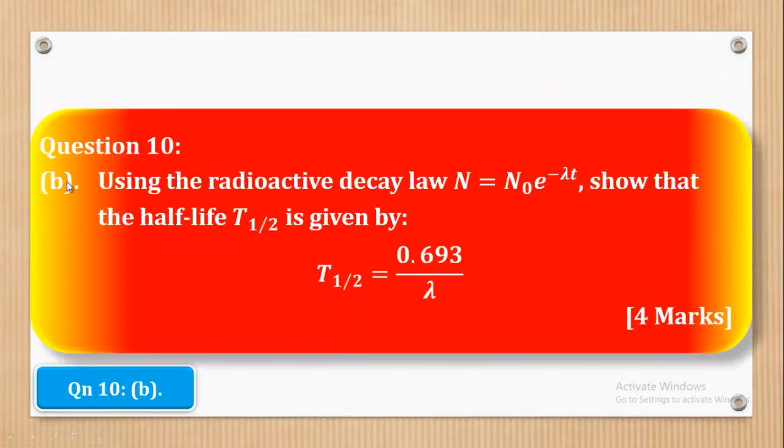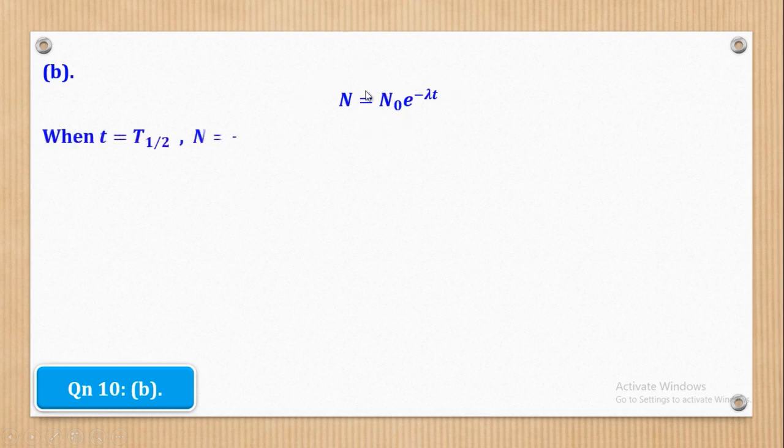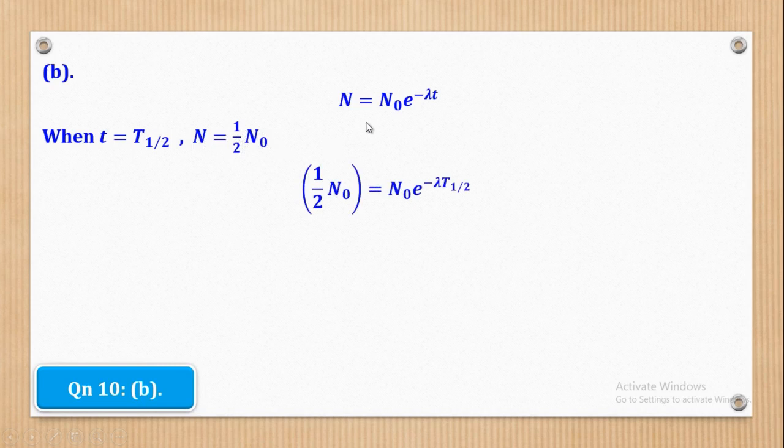Question 10 Part B says Using the radioactive decay law, n equal to n0e raise the power negative lambda which is the decay constant times time, show that the Half-Life t-half is given by t-half being equal to 0.693 over lambda where lambda is the decay constant. So first of all we shall start with what is given. And then we shall say that when T is equal to t-half, remember t-half is the half-life, it means that the original mass, the n will now be equal to half the original mass. Now this is the n0, it was the original mass, original number of active nuclei. So therefore n will be equal to half n0. When I substitute in this, I will come up with this.